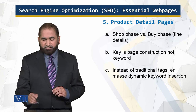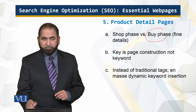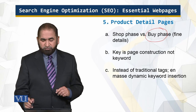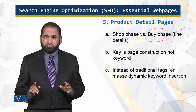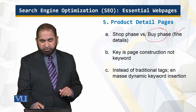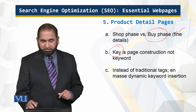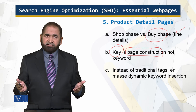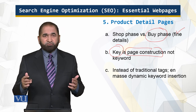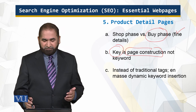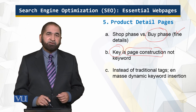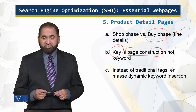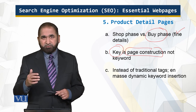Then there are the product detail pages. People in the buy phase have almost made up their mind — they are looking for finer details. At this stage, keywords are not the priority; the page construction is the key. Instead of traditional tags, use dynamic tags en masse, and use these techniques to make these pages work for you.